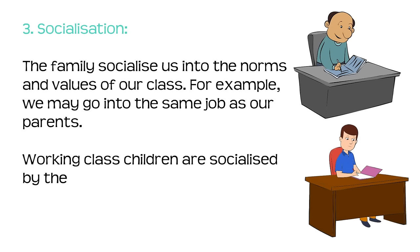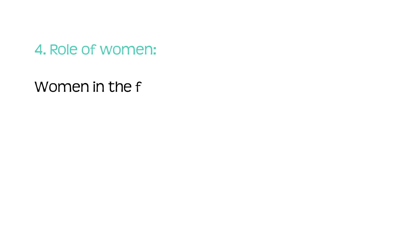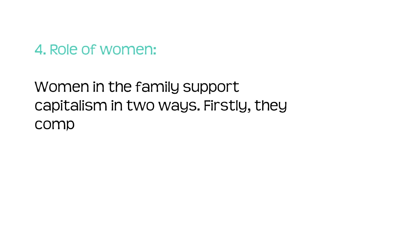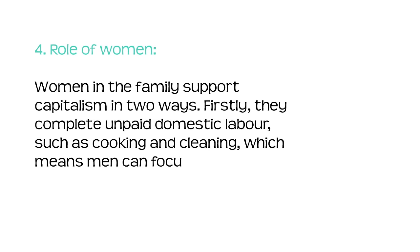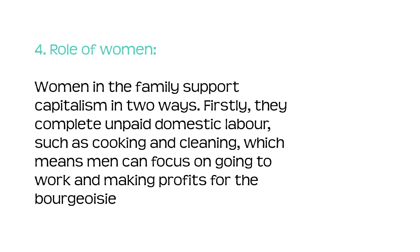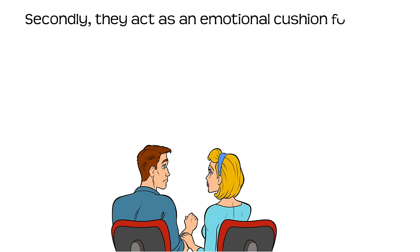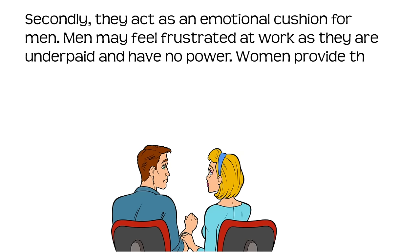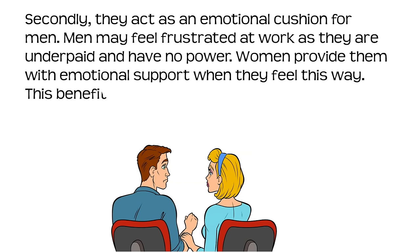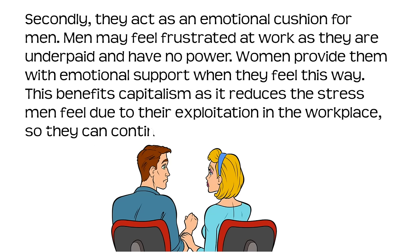Working class children are socialised by the family to accept their subordinate role in society and see the system as fair. Fourthly, the role of women: women in the family support capitalism in two ways. Firstly, they complete unpaid domestic labour, such as cooking and cleaning, which means men can focus on going to work and making profits for the bourgeoisie. Secondly, they act as an emotional cushion for men. Men may feel frustrated at work as they are underpaid and have no power. Women provide them with emotional support, which benefits capitalism as it reduces the stress men feel due to their exploitation in the workplace, so they can continue to go to work.